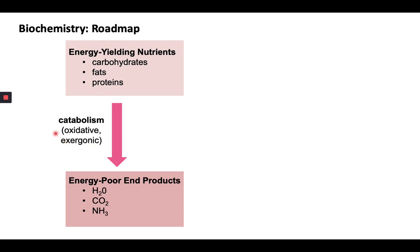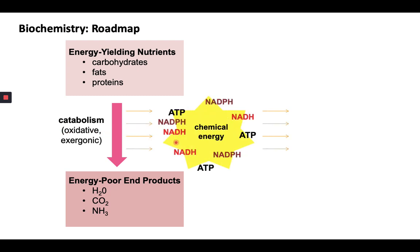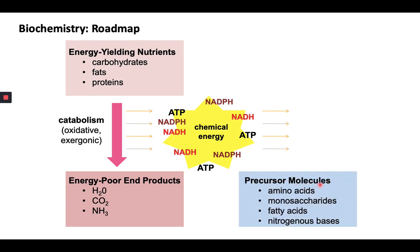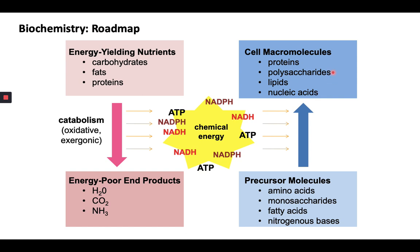The energy produced from the breakdown of nutrients is used to synthesize cell macromolecules from simple monomeric precursor molecules like monosaccharides, amino acids, fatty acids, and nitrogenous bases — into carbohydrates, proteins, lipids, and nucleic acids, respectively. This process is energy-requiring or endergonic and is termed anabolic. It is likewise reductive, meaning it involves the addition of electrons into substances.